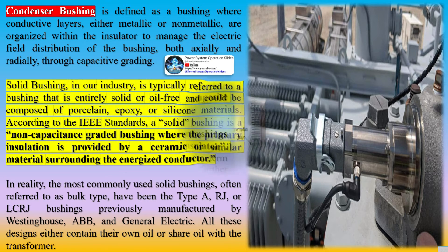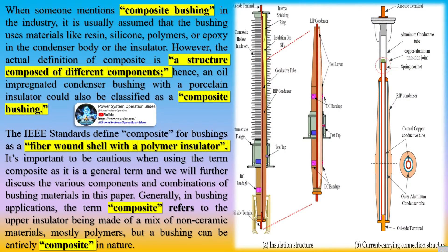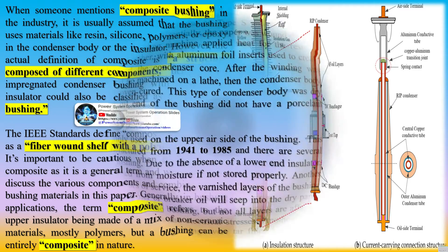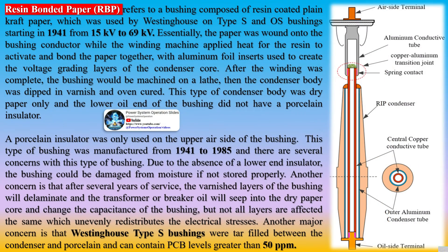A solid bushing in our industry is typically referred to as a bushing that is entirely solid or oil-free and could be composed of porcelain, epoxy, or silicone materials. According to IEEE standards, a solid bushing is a non-capacitance graded bushing where the primary insulation is provided by a ceramic or similar material surrounding the energized conductor. The most commonly used solid bushings, often referred to as bulk type, have been the type ARJ or LCRJ bushings previously manufactured by Westinghouse, ABB, and General Electric. All these designs either contain their own oil or share oil with the transformer.